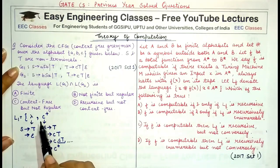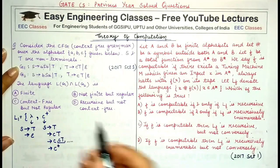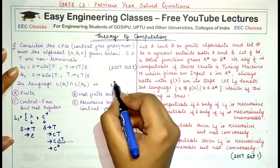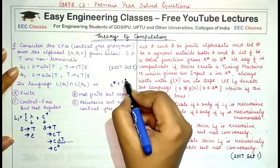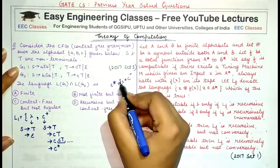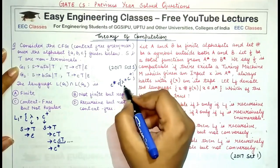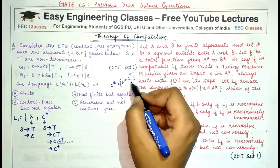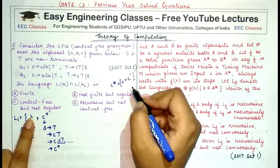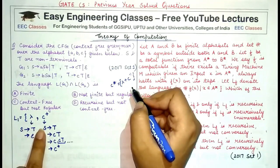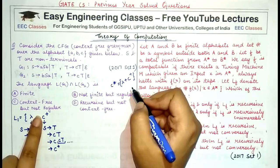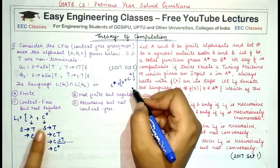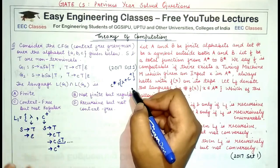C* equals lambda plus C+, so that expression accommodates lambda separately. The sequence of productions I've described will produce C+, meaning a single or more than one occurrence of C.